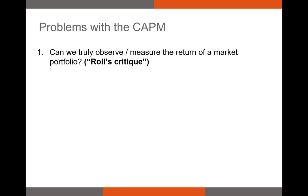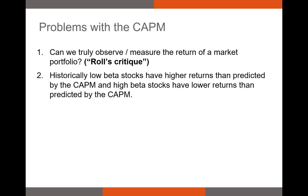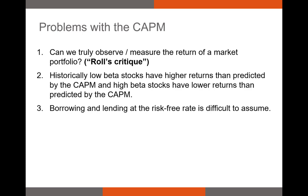It's well known that historically low-beta stocks have higher returns than expected by the CAPM, and high-beta stocks have lower returns than predicted. One of the best explanations is that some institutional investors like mutual funds are not allowed to hold assets like junk bonds or non-investment-grade bonds. Therefore they tend to over-invest in high-beta stocks, pushing prices up and future returns down — as assessed by researchers Frazzini and Pedersen.